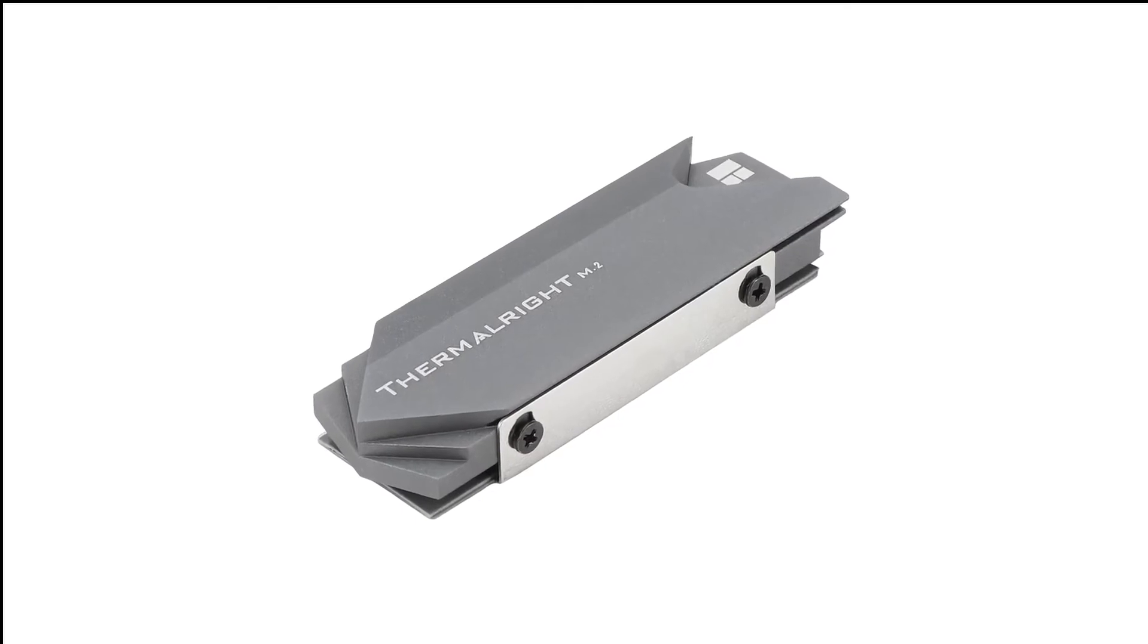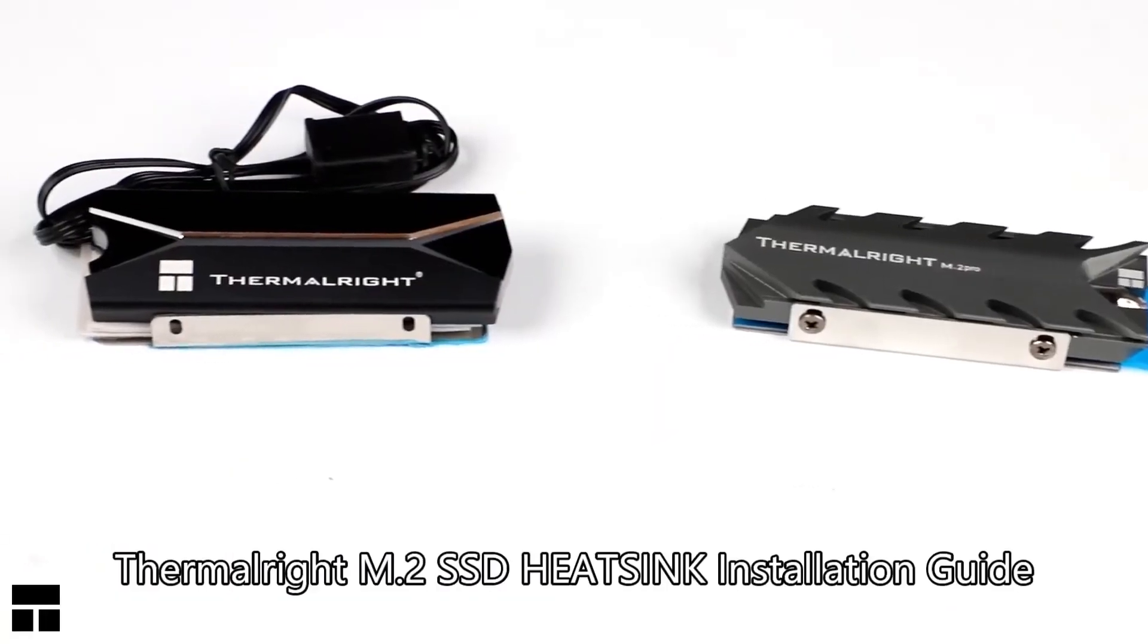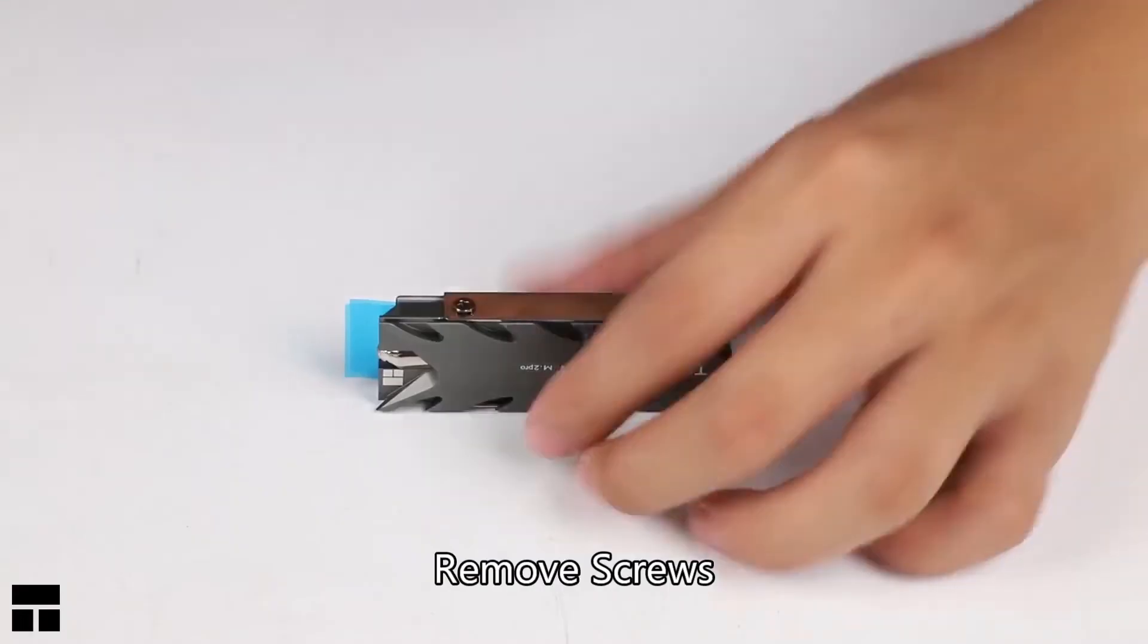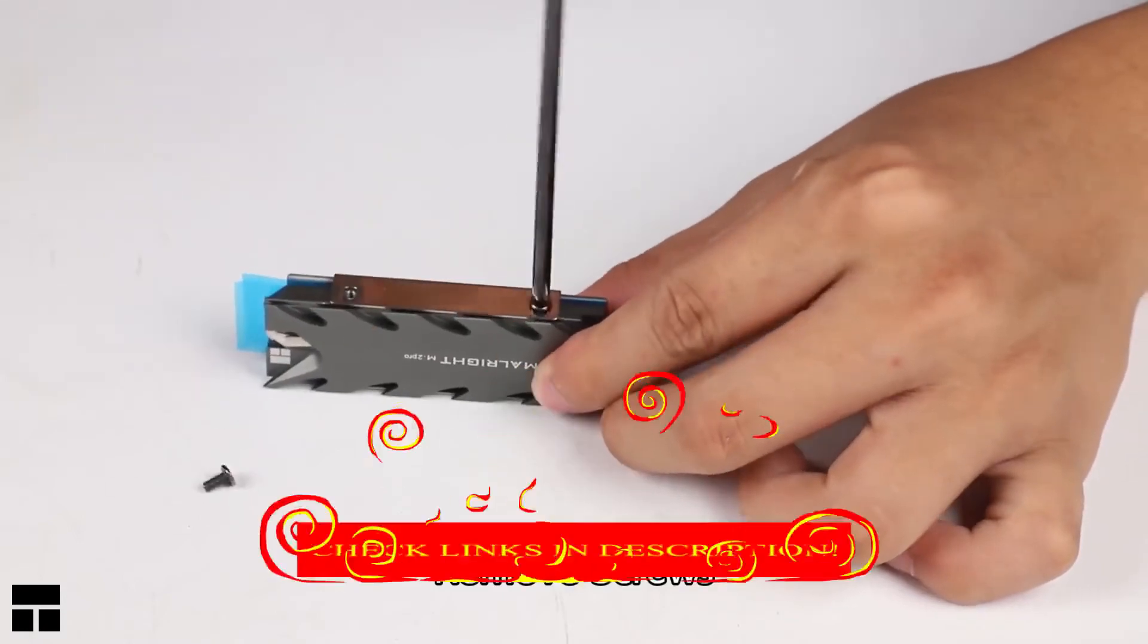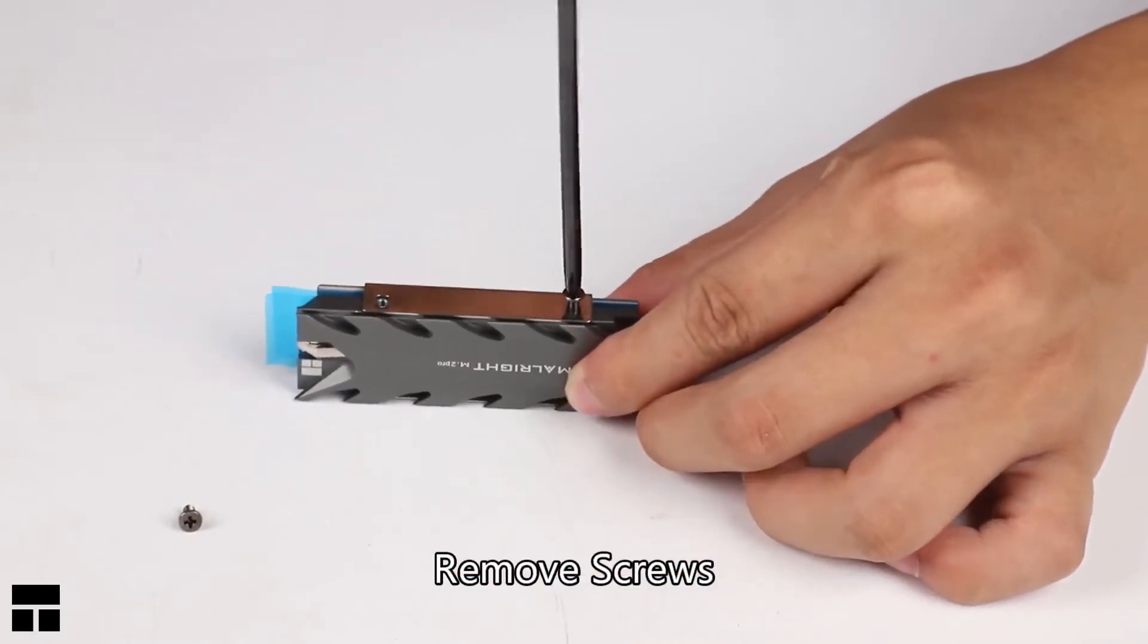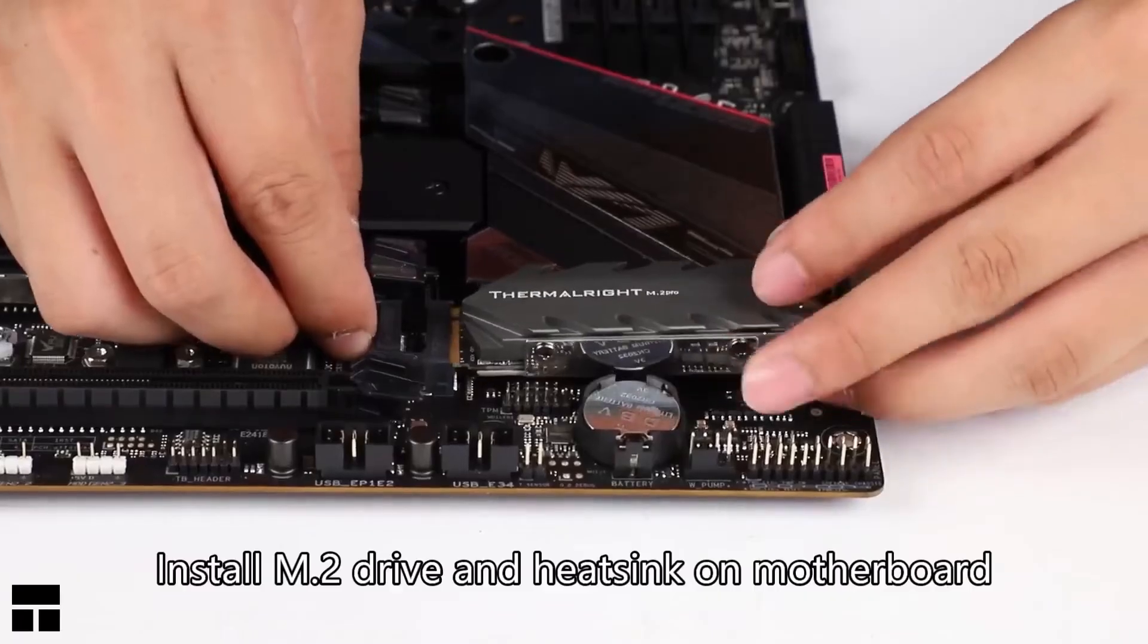Number 1 in my list, Thermalright M2 2280 SSD Heatsink. The Thermalright M2 heatsink cooler is, no way around it, a chunky one. It's a rather large option that's been specifically designed for use in desktop PCs and with motherboards that don't have an integrated heatsink solution.